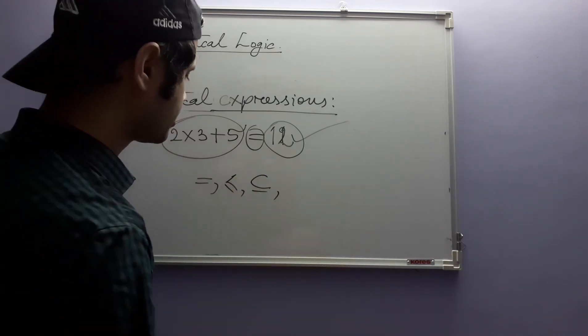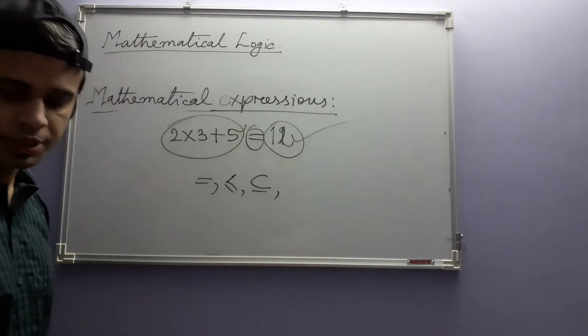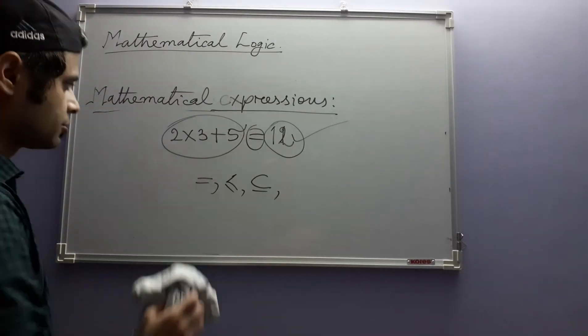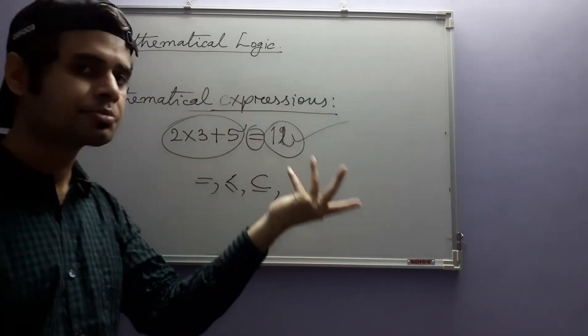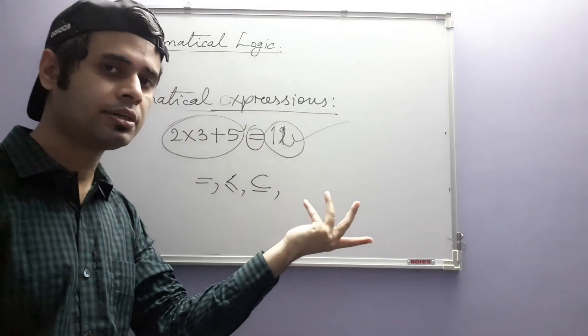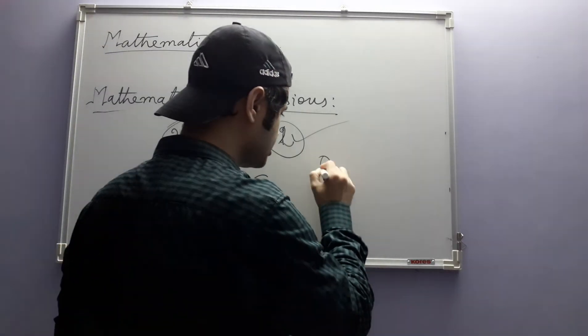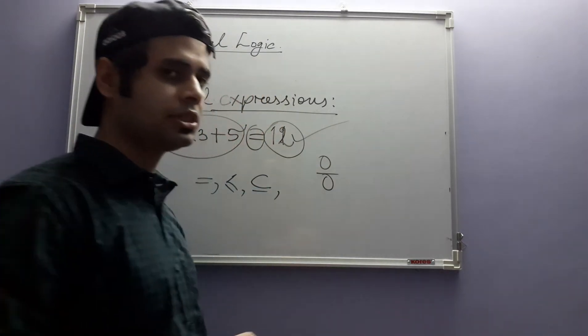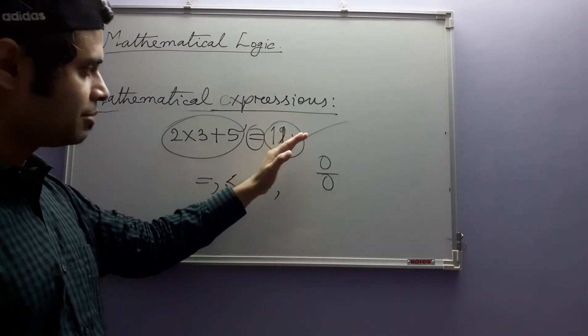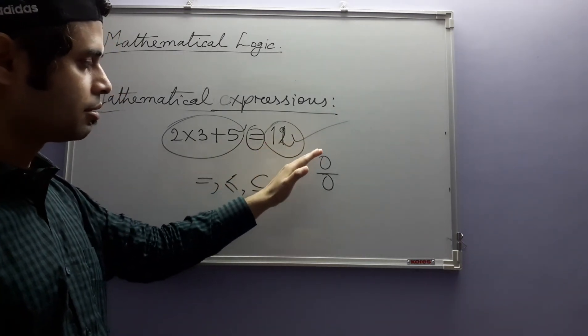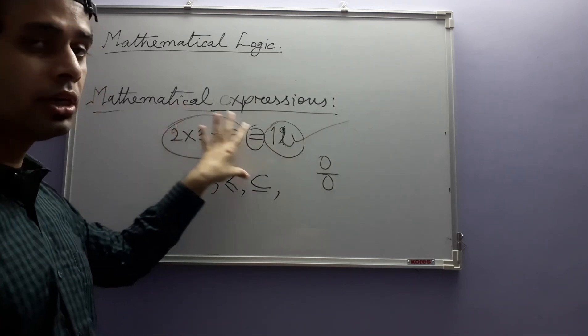So mathematical statement consists of mathematical expressions and some relations between them. We will come across them in due time. So just like mathematical statements, mathematical expressions can also be well defined or ill defined. For example, this is a mathematical expression which is ill defined. So a mathematical statement must consist of only well-